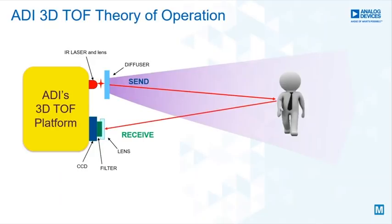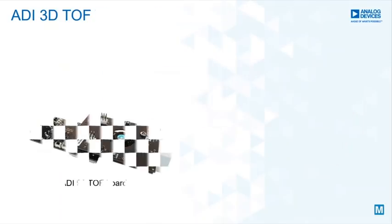The distance is calculated depending on the time difference between the transmitted and received signal. The same procedure is repeated for each pixel in the matrix until the pattern is completed to create an image.